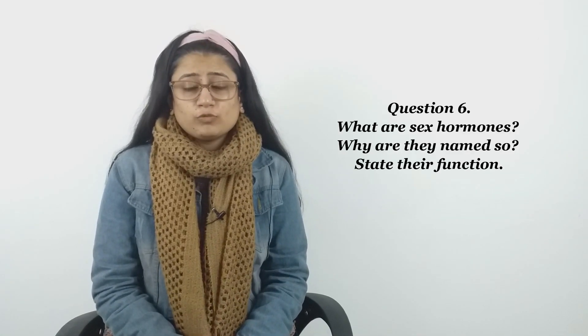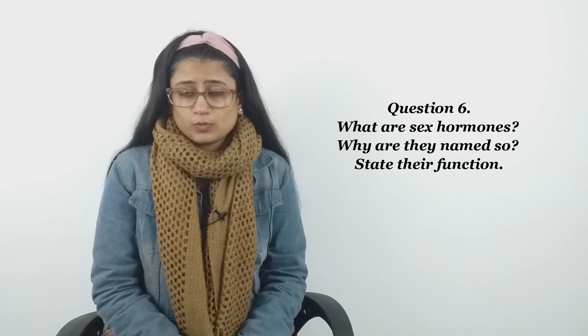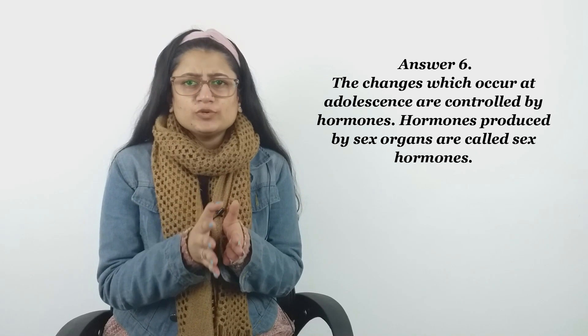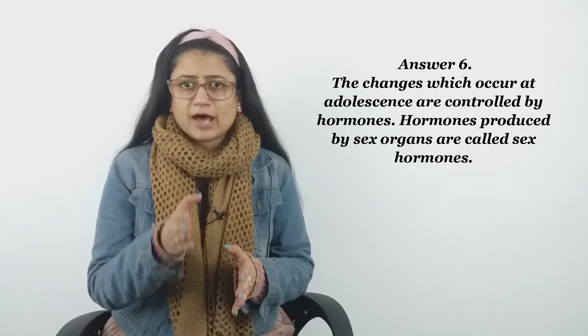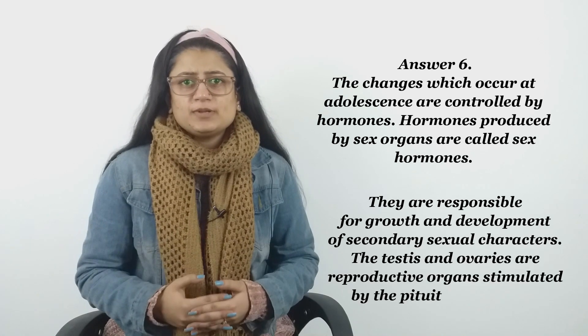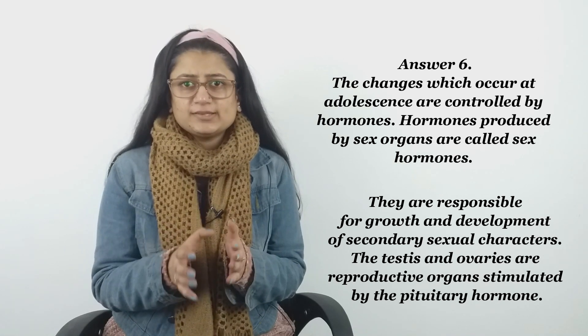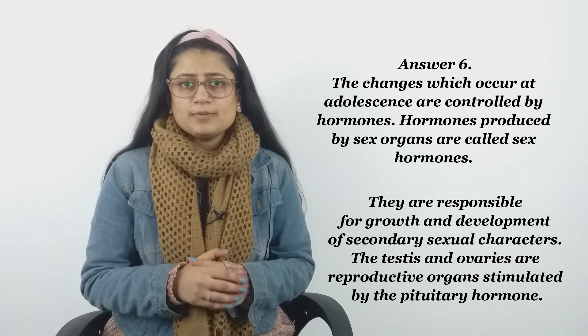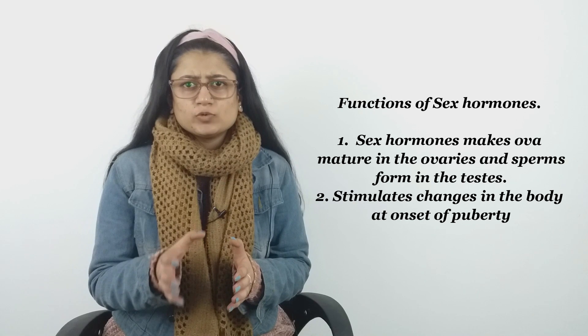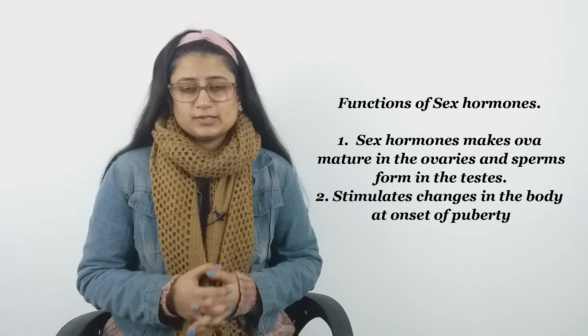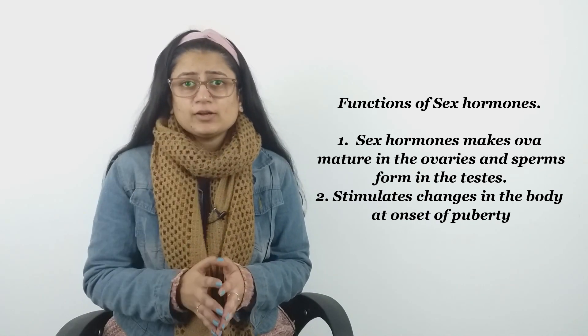Question number six: What are sex hormones? Why are they named so? State their function. Answer: The changes which occur at adolescence are controlled by hormones. Hormones produced by sex organs are called sex hormones. They are responsible for growth and development of secondary sexual characters. The testes and ovaries are reproductive organs stimulated by the pituitary hormone. The functions of sex hormones are: they make ova mature in the ovaries and sperms form in the testes, and they stimulate changes in the body at onset of puberty.